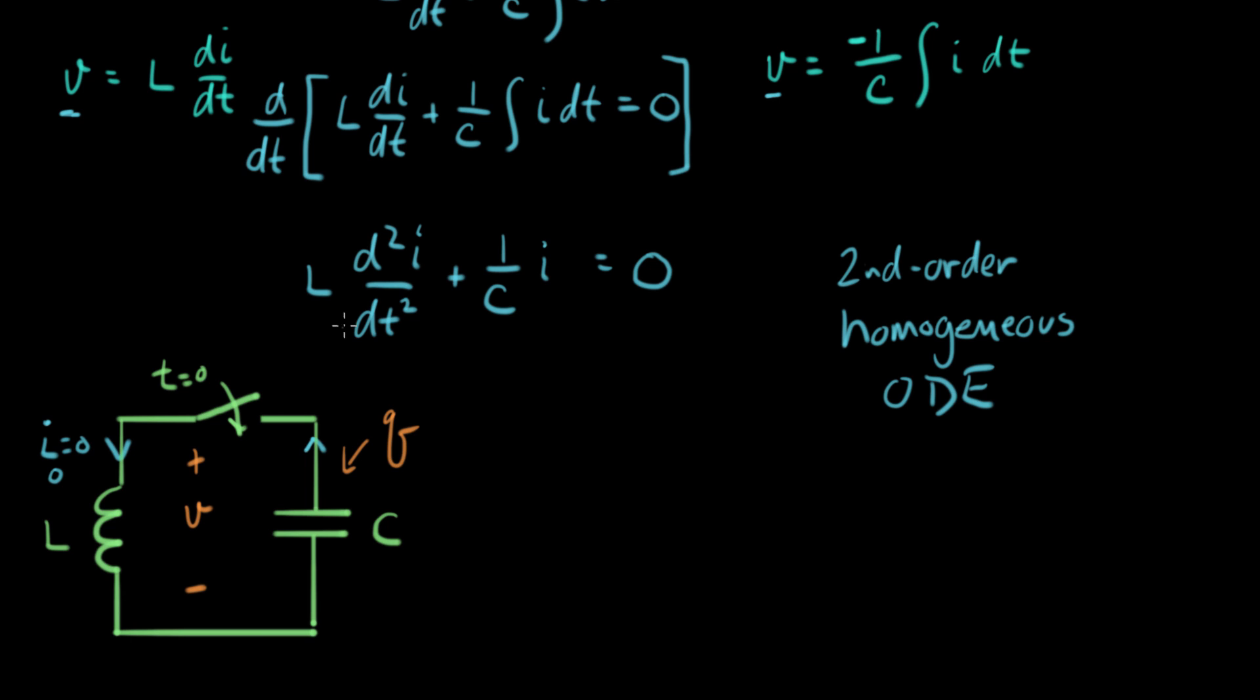What we have here is two things: two terms that have to add up to zero for all time. And so that means that whatever function I pick for I, and there's some scaling factors here, let me write this equation like this.